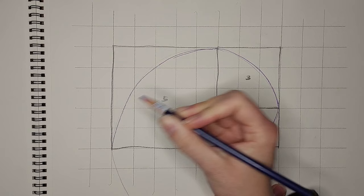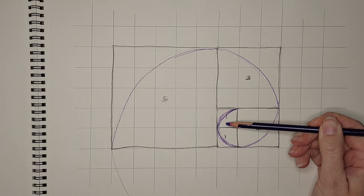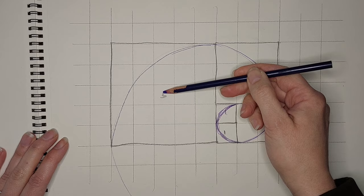So I hope that makes sense. We have one, one and one, one and one is two, one and two is three, two and three is five, five and three is eight, eight and five is 13, and so on and so forth.